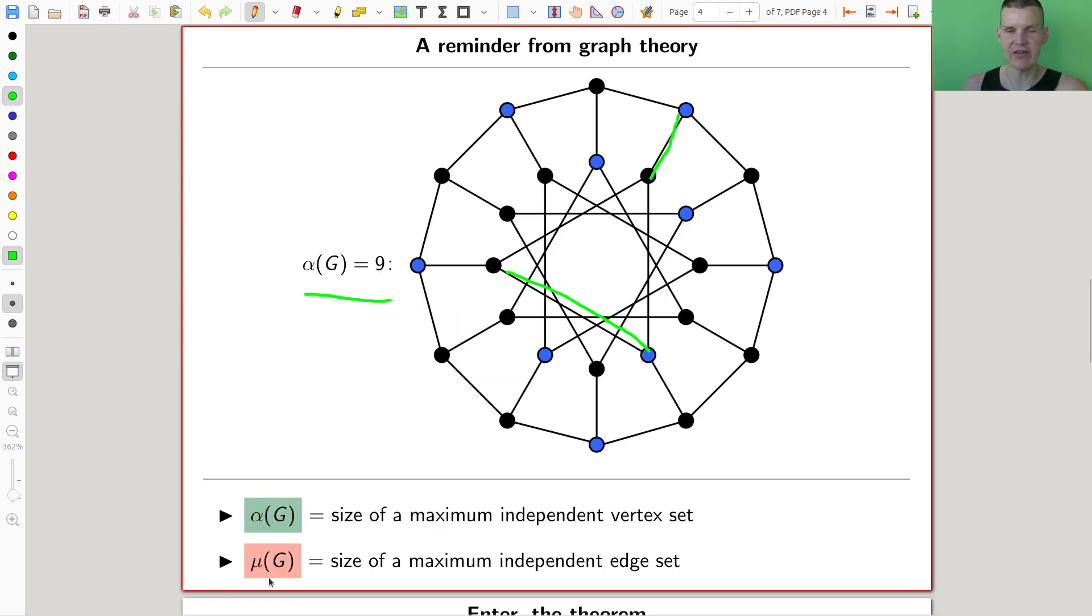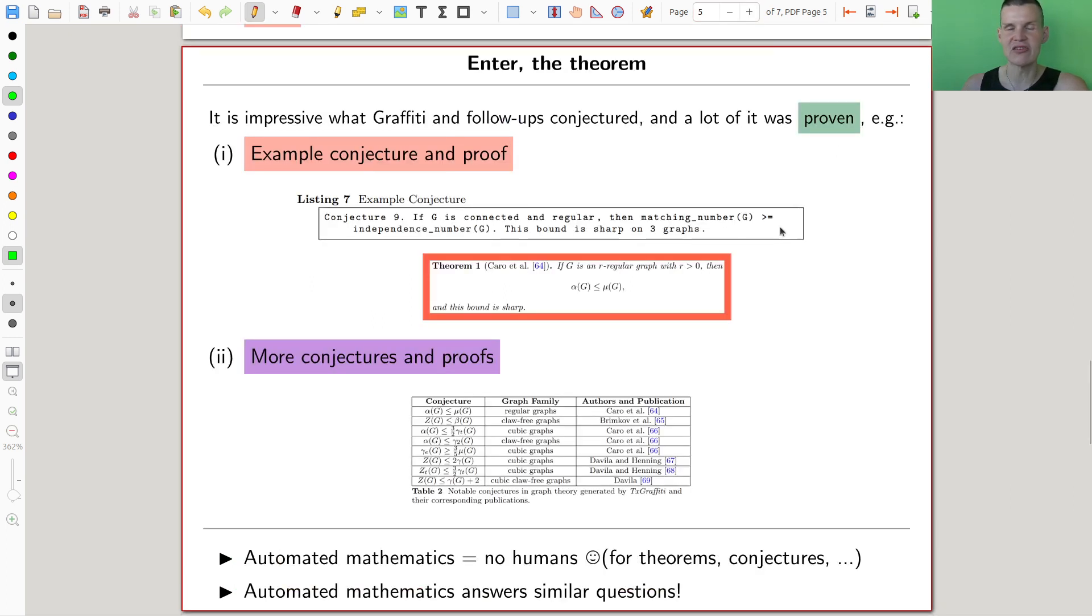So mu is the matching number, kind of a strange name, it's kind of a weird name. It should be called edge independence number, but it's called matching number. Anyway, and alpha is called the vertex independence number. And yeah, so the conjecture is that mu is bigger than alpha. Mu is bigger than alpha for regular graphs, and it's essentially sharp. So you can construct a regular graph where this is exactly sharp. And it was later then proven.